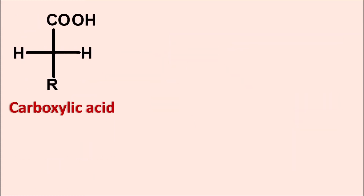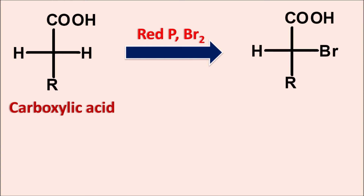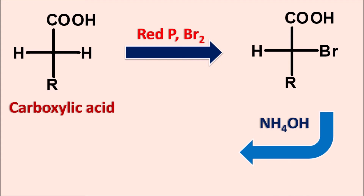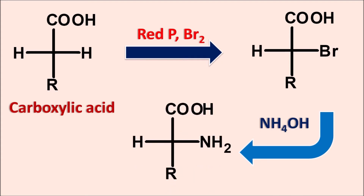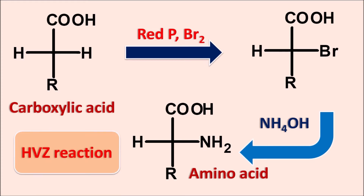Let us take the example of a carboxylic acid with enantiotopic hydrogens. Suppose this is going to be reacted with red phosphorus and bromine, then it results in an alpha-bromo carboxylic acid. This product is further reacted with ammonium hydroxide, then it results in one of the alpha-amino acids. In this way, carboxylic acids can be converted to amino acids through the HVZ reaction. The HVZ reaction is the conversion of carboxylic acids into alpha-bromo carboxylic acids, and when reacted with ammonium hydroxide, they produce amino acids. But which type of amino acid is going to be formed — the D amino acid or L amino acid?